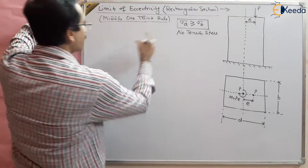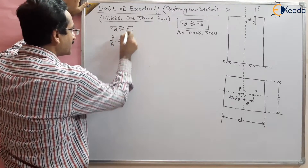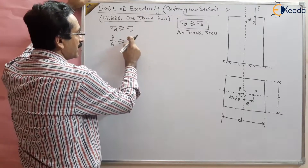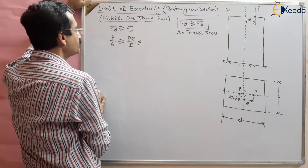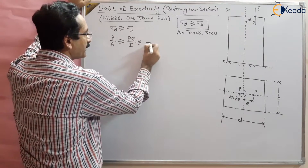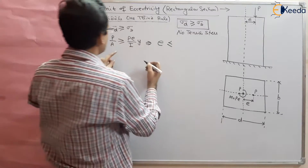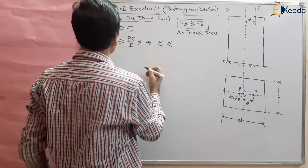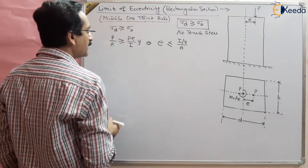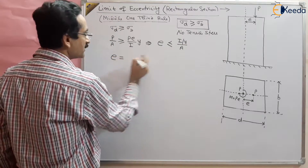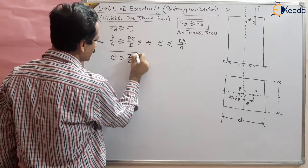The direct stress is P divided by A. The bending stress is M divided by I, multiplied by Y, where M equals PE — so it becomes PE divided by I, multiplied by Y. Setting direct stress greater than or equal to bending stress and cancelling P, we get: eccentricity E should be less than or equal to I divided by Y, divided by A. Since I divided by Y is the section modulus Z, the condition becomes E ≤ Z divided by A.